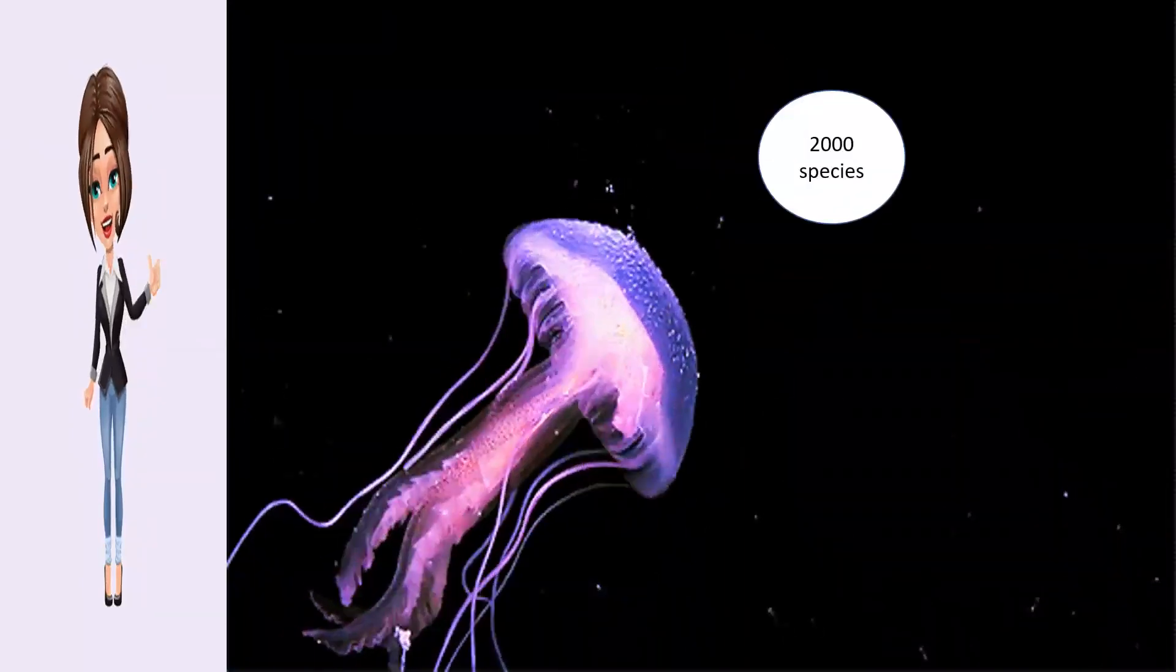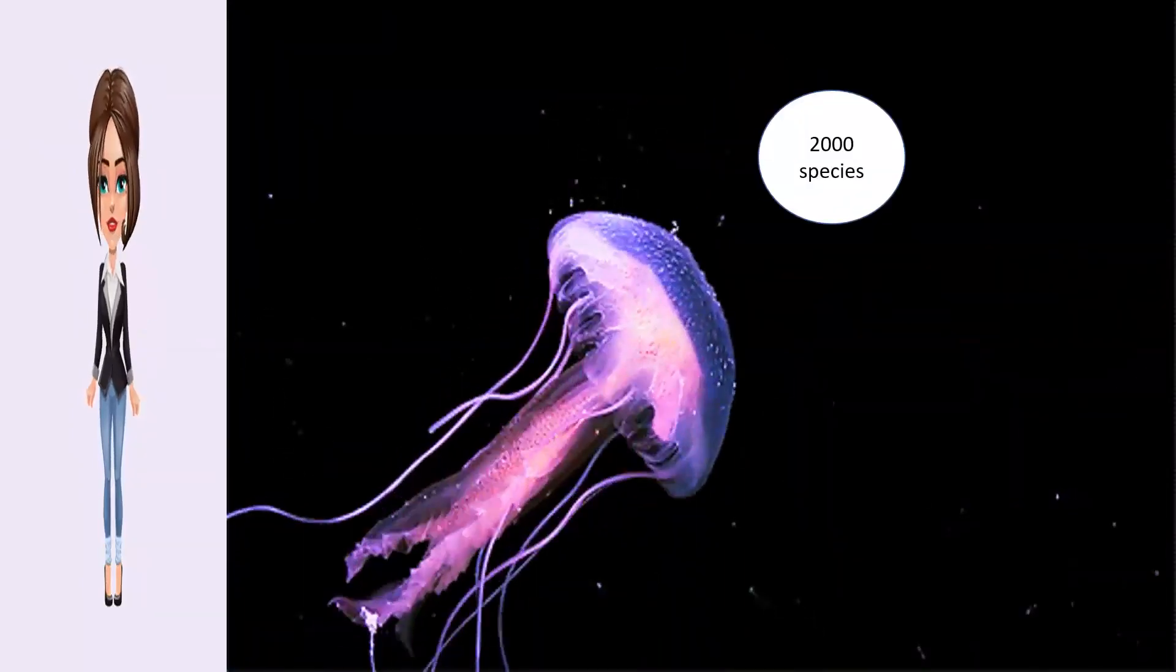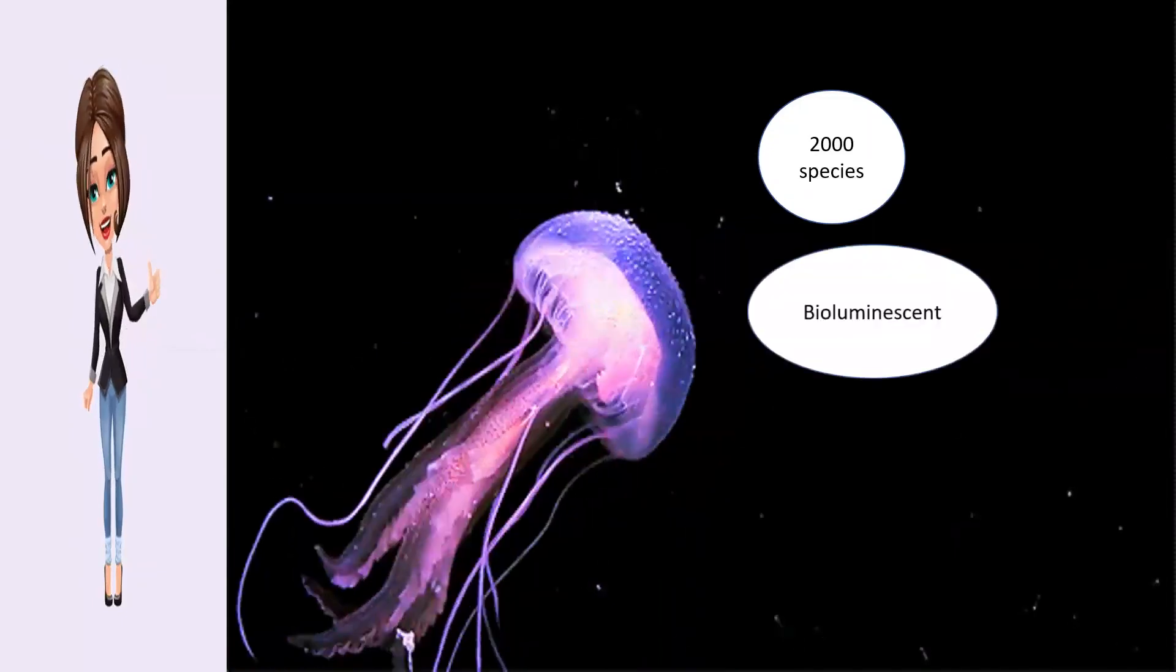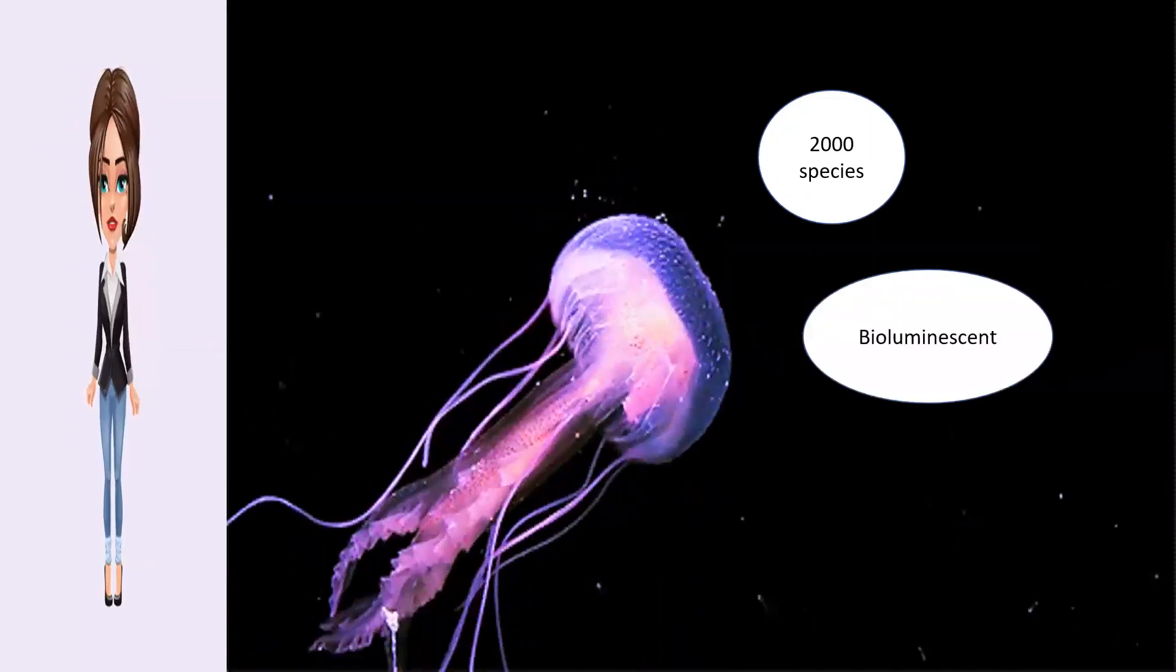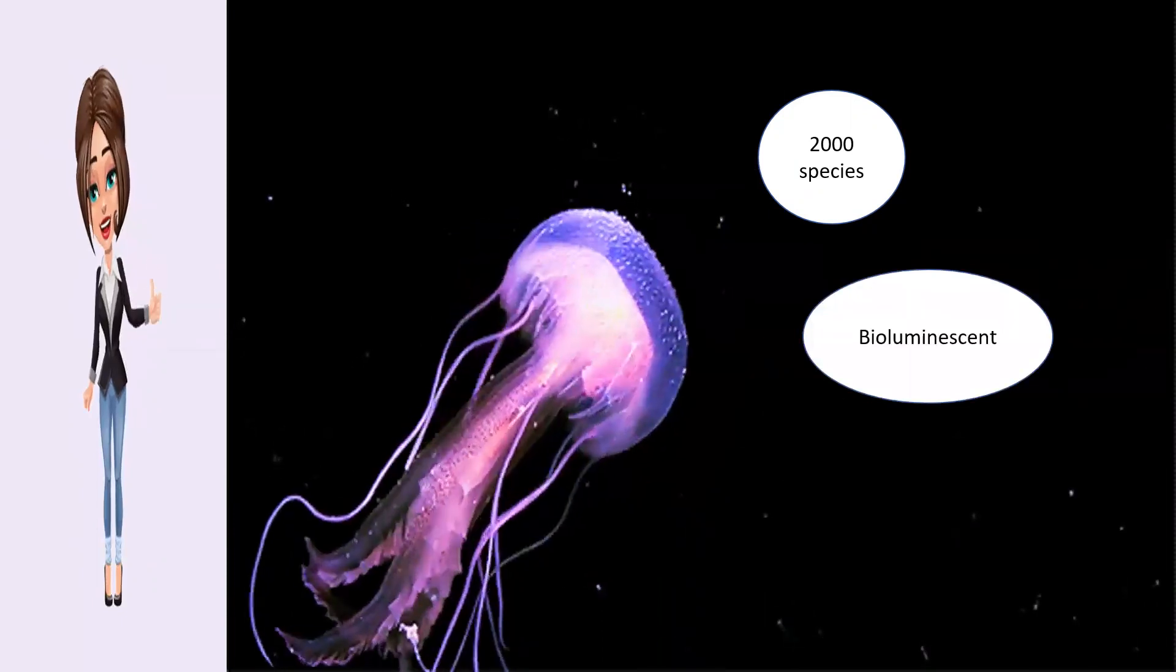There are 2000 jellyfish species. Some jellyfish are bioluminescent, which means they produce their own light.